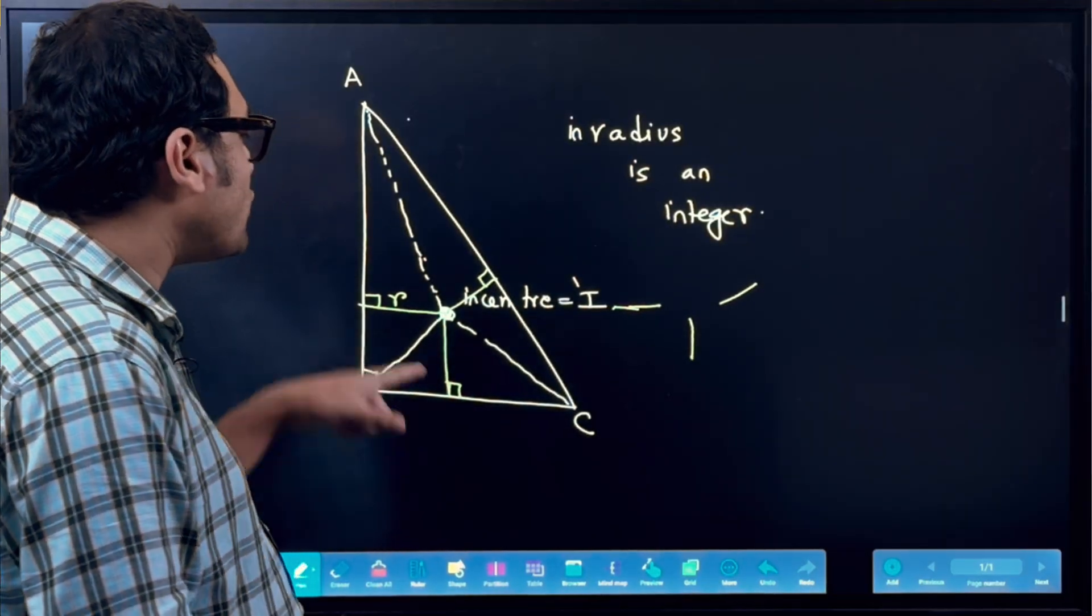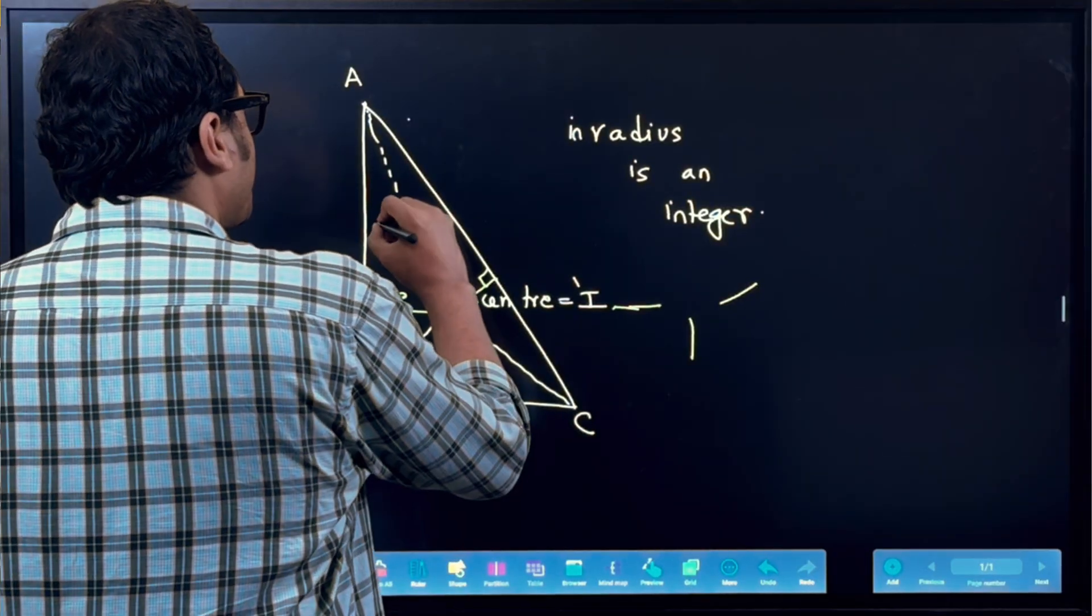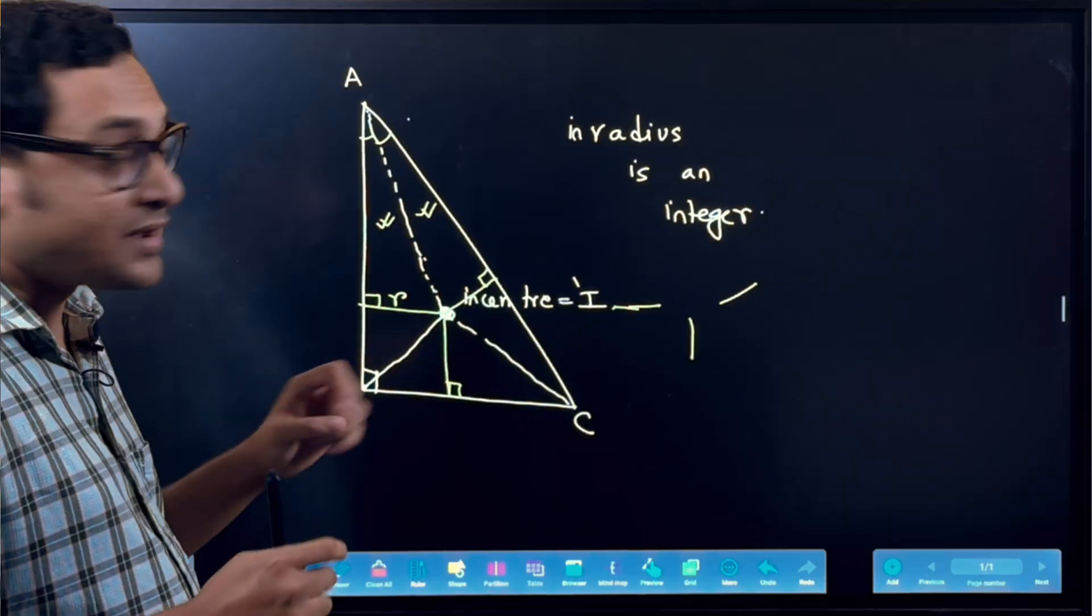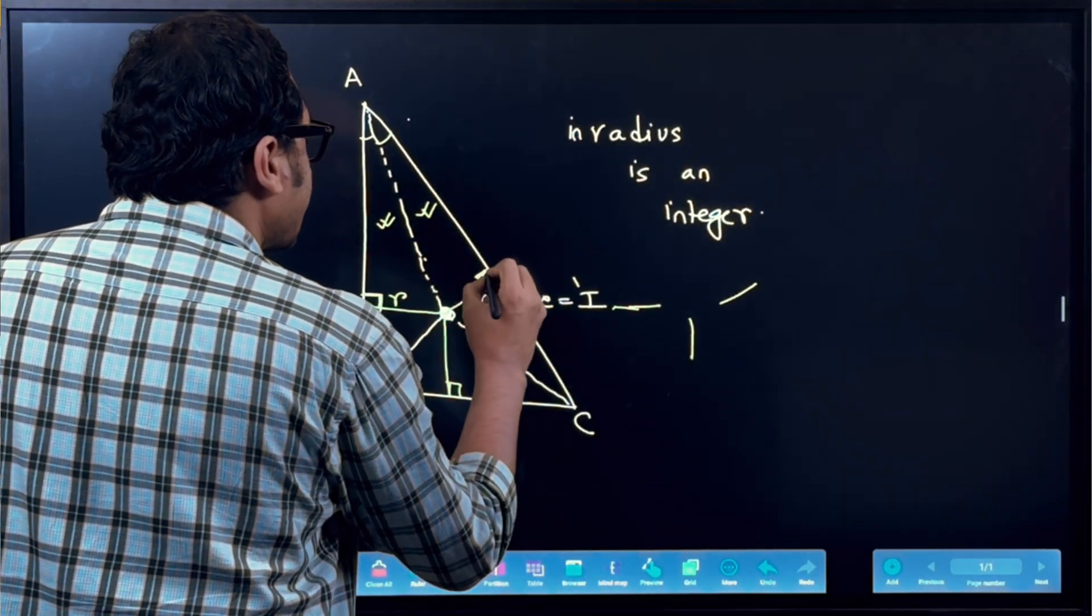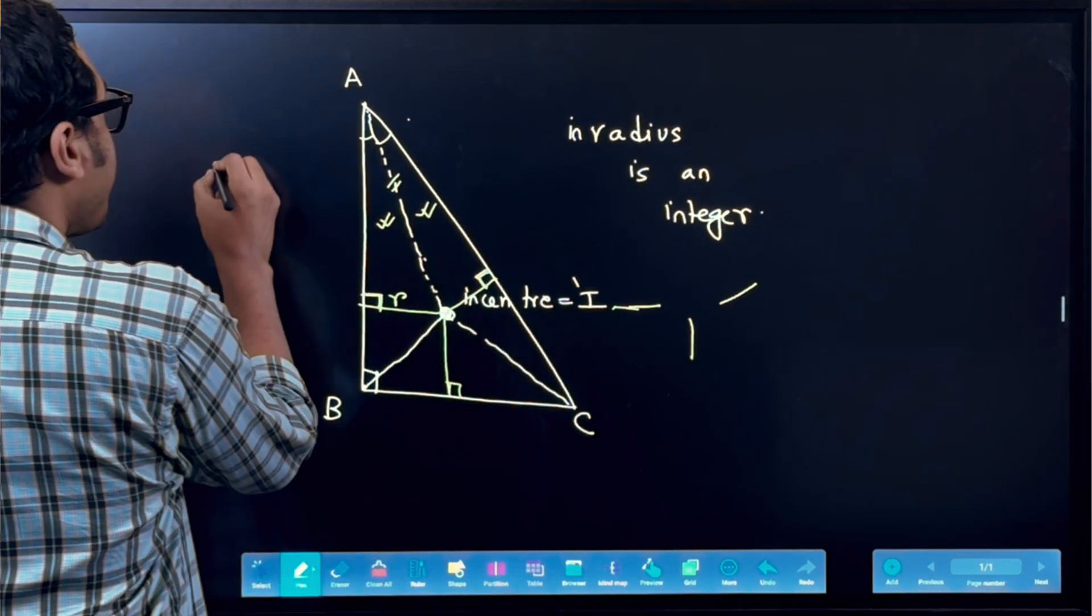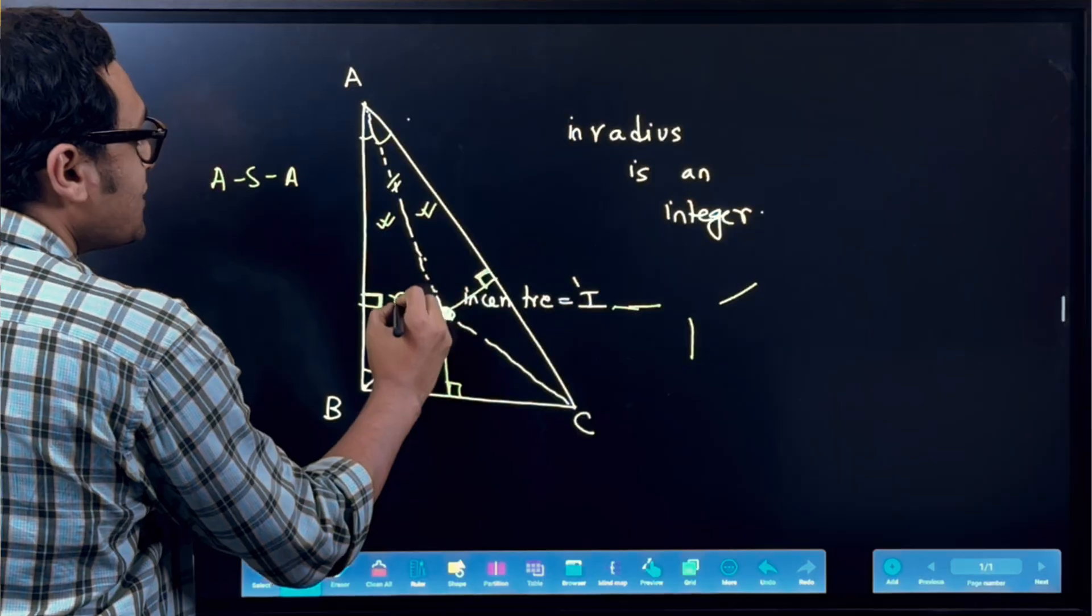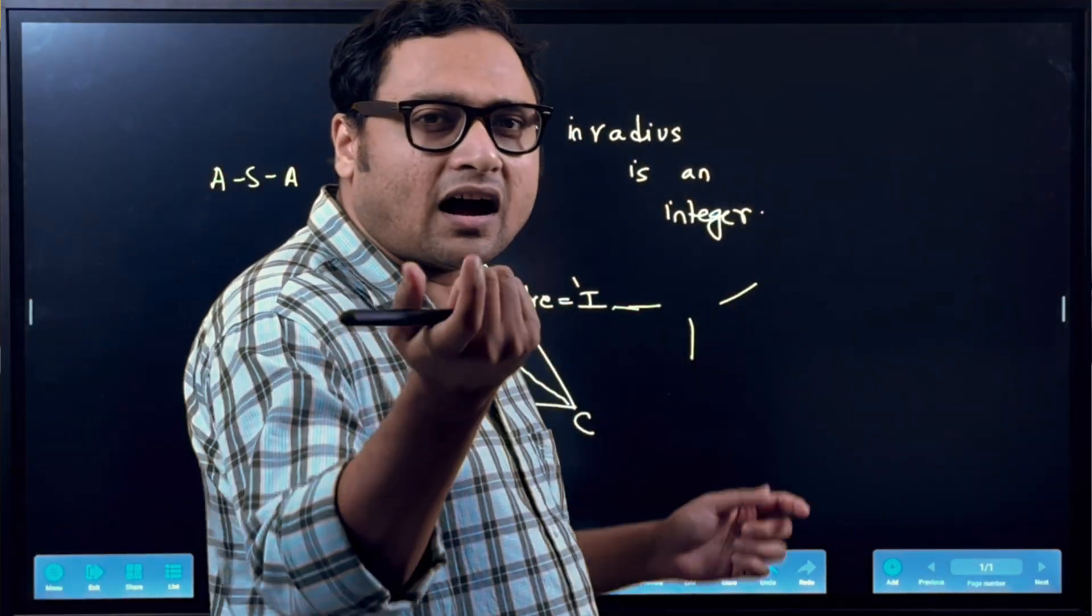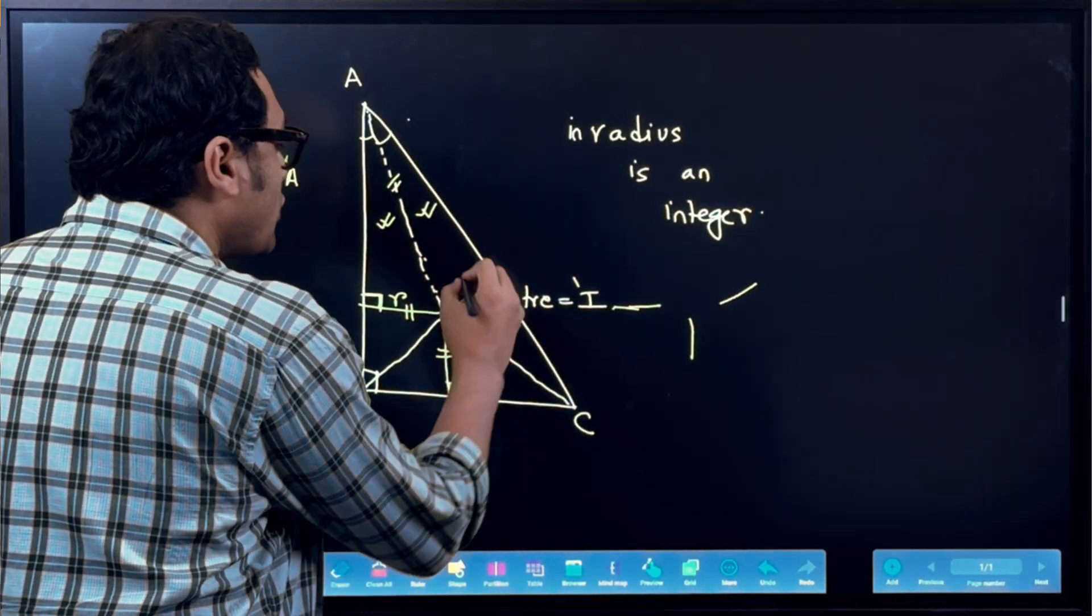How can you prove that all these green pieces are equal? It's very simple. You can show that these two triangles are congruent. These two angles are of course equal, because it's an angle bisector. This angle is 90 and this angle is 90. And this particular side is common. So by angle-side-angle congruency, these two triangles are equal, so these two sides are equal. Similarly, you can show that the other green side is also equal with all of them.